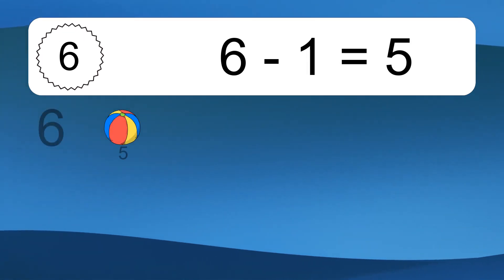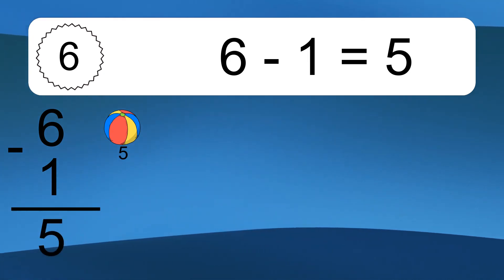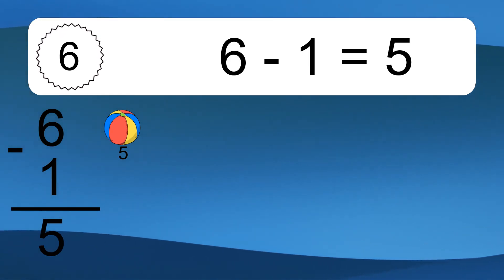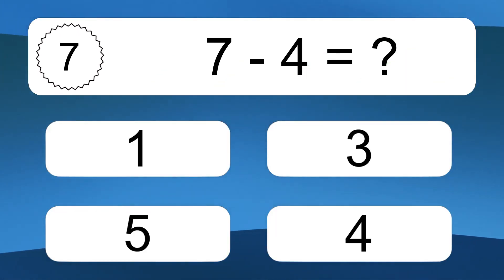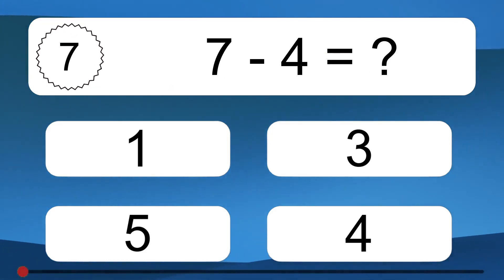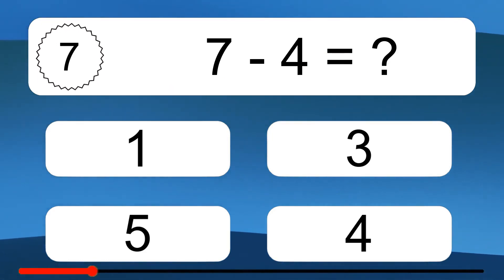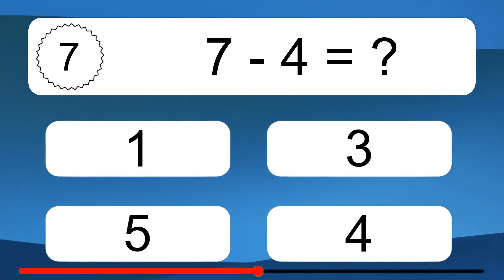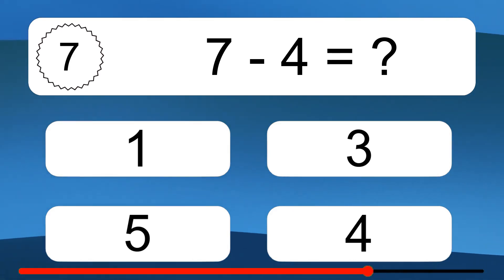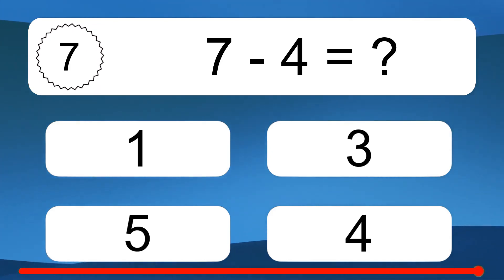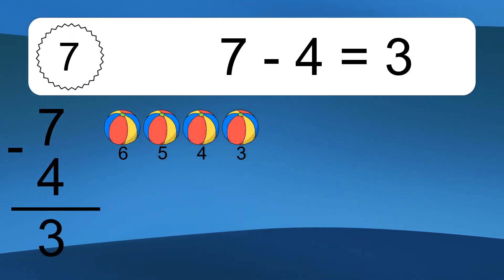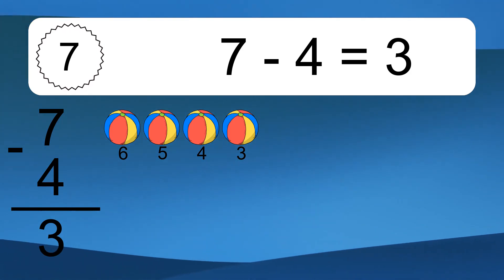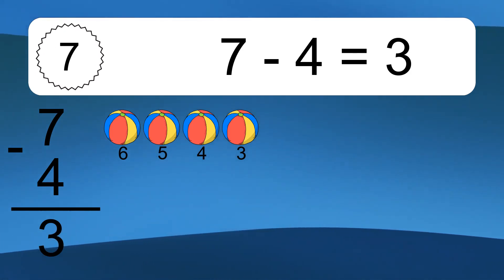6 minus 1 equals 5. Let's count it. 5. 7 minus 4 equals what? 7 minus 4 equals 3. Let's count it. 6, 5, 4, 3.